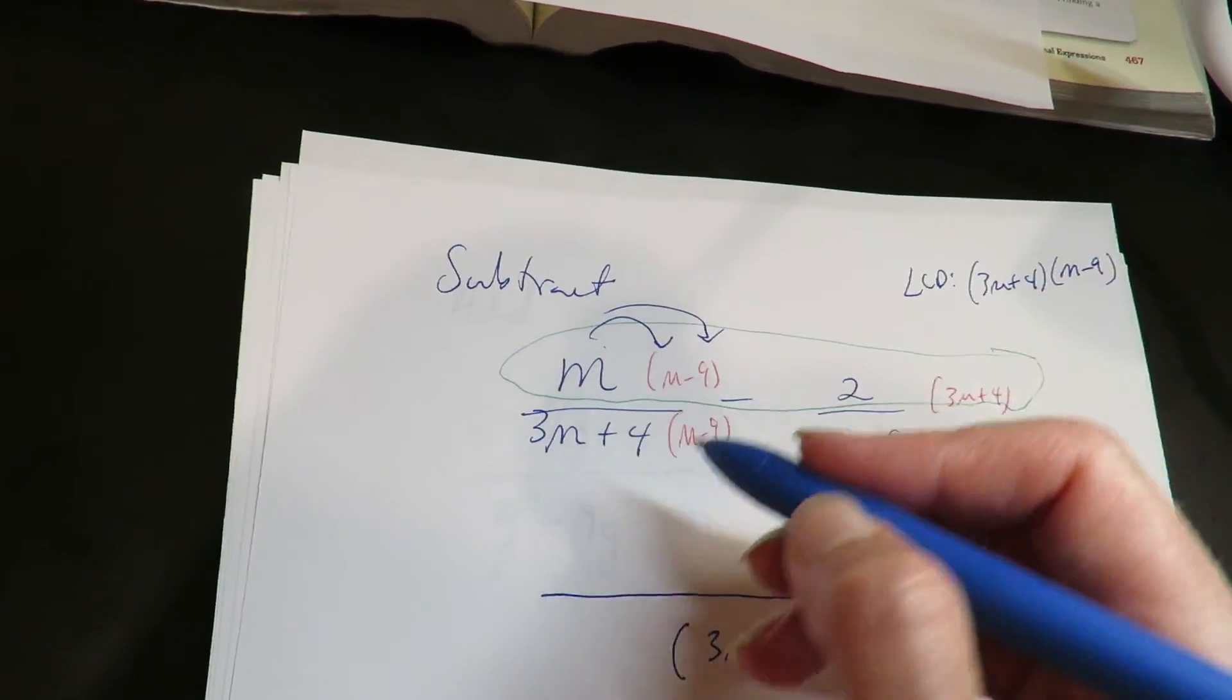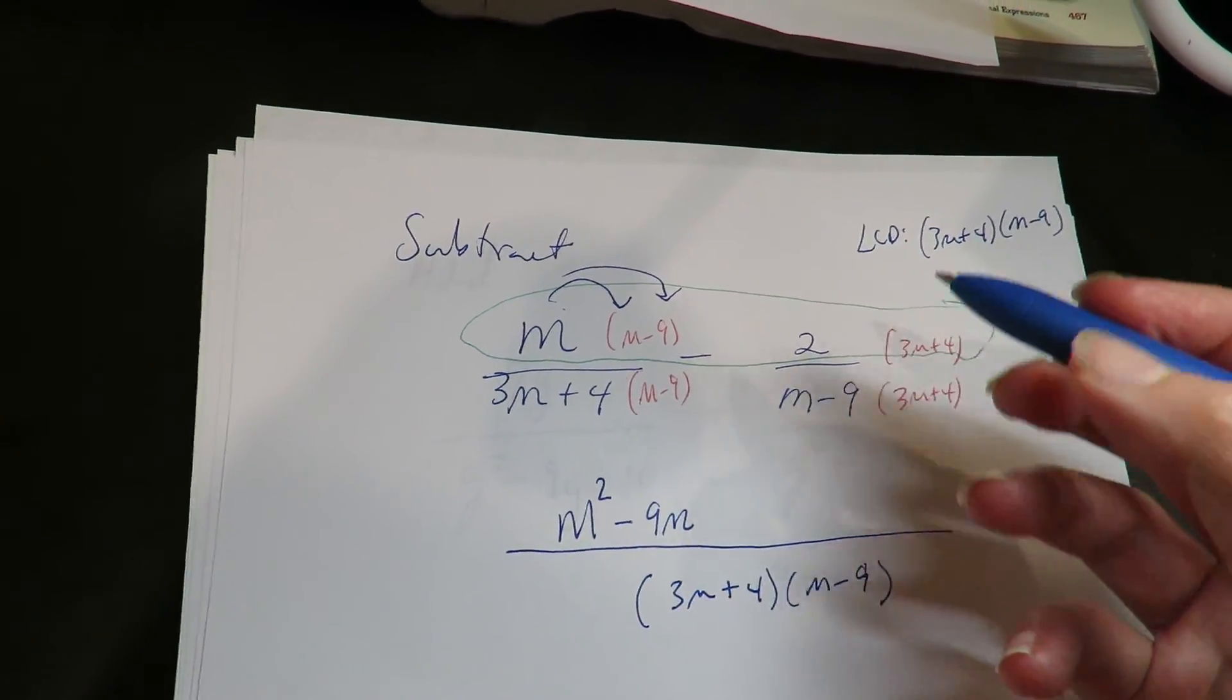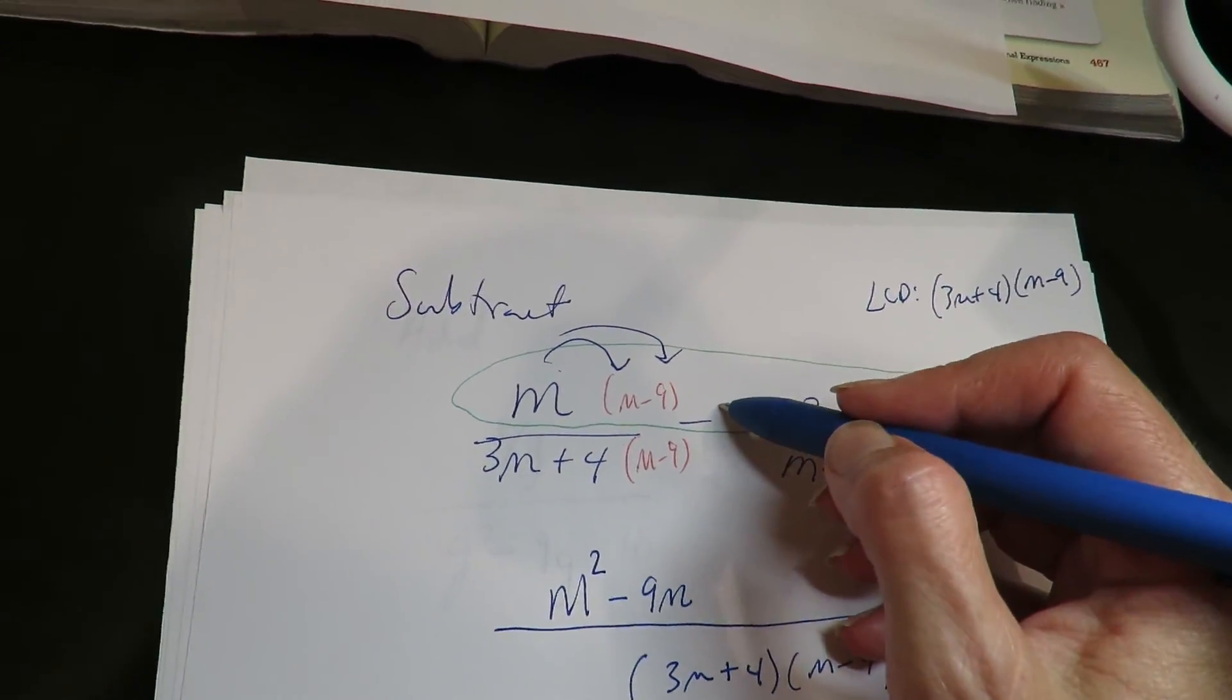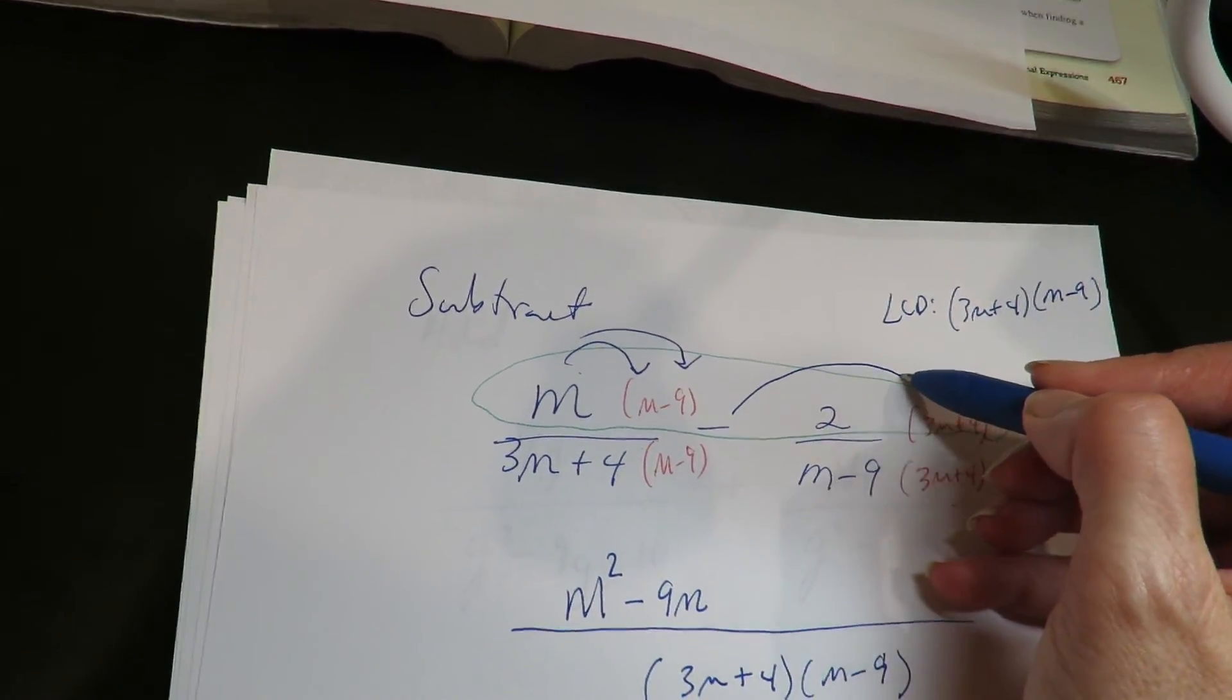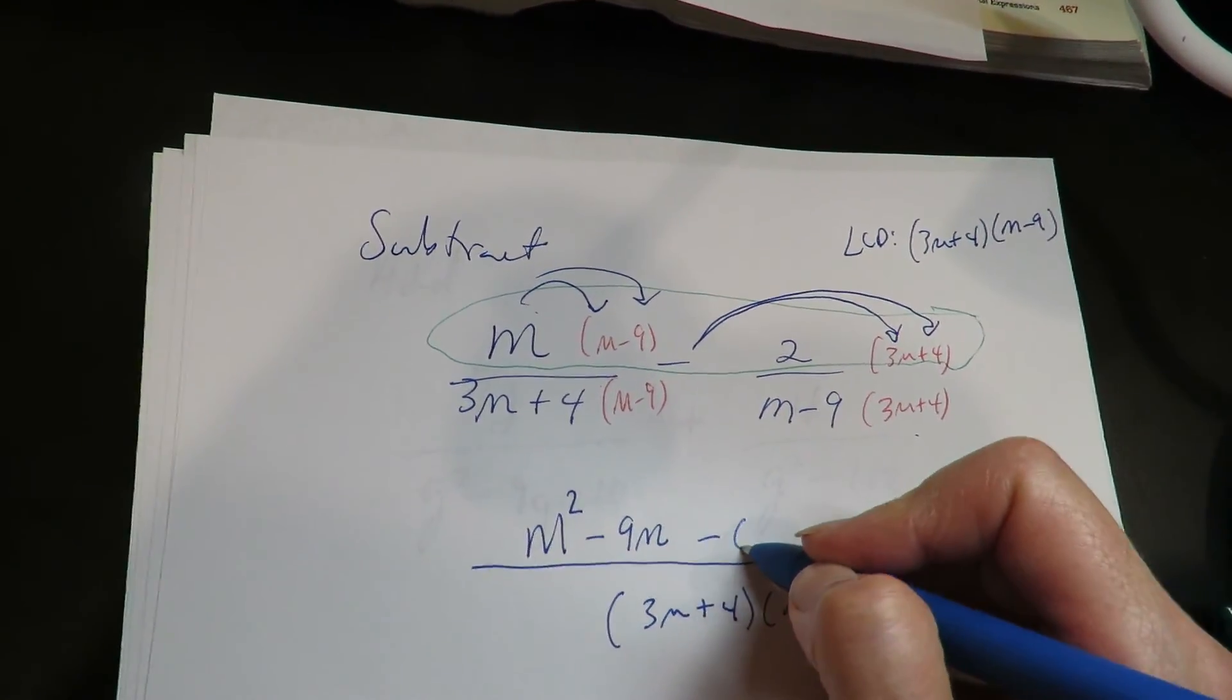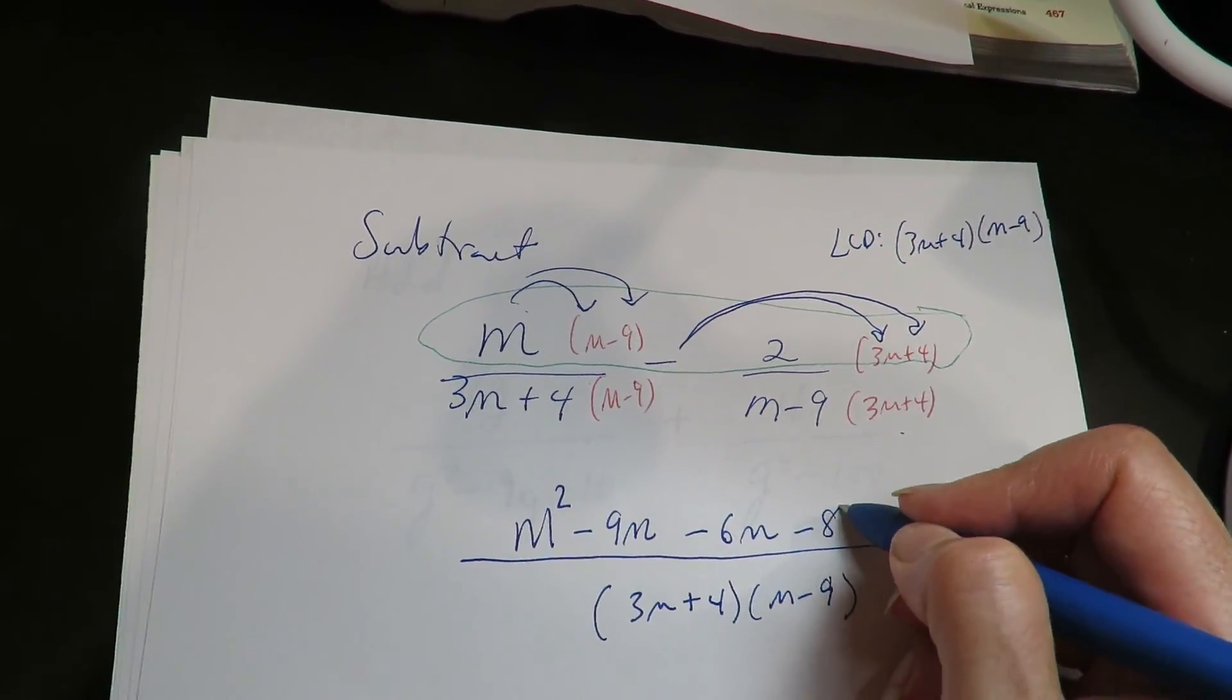So I'm going to distribute the M. And you've got to be careful here because this isn't just a 2, this is a negative 2. So you're distributing a negative 2 into both of these. So negative 2 times 3M is negative 6M. Negative 2 times 4 is negative 8.